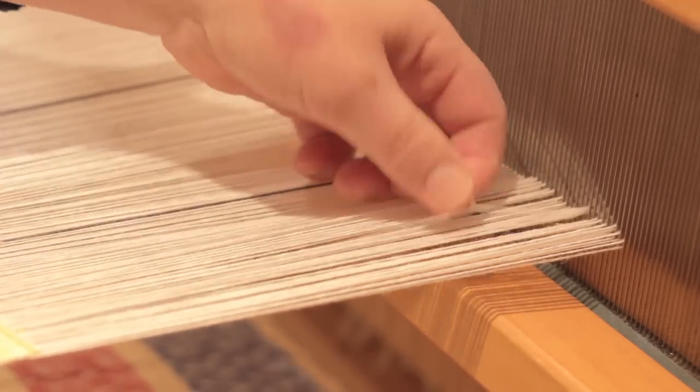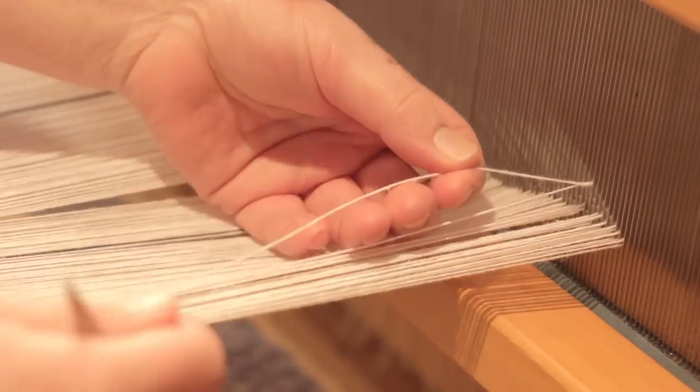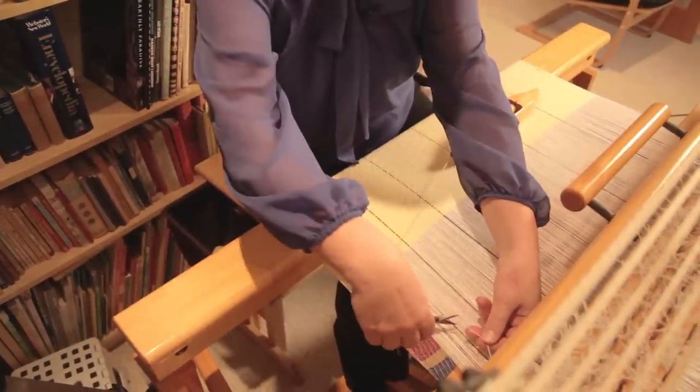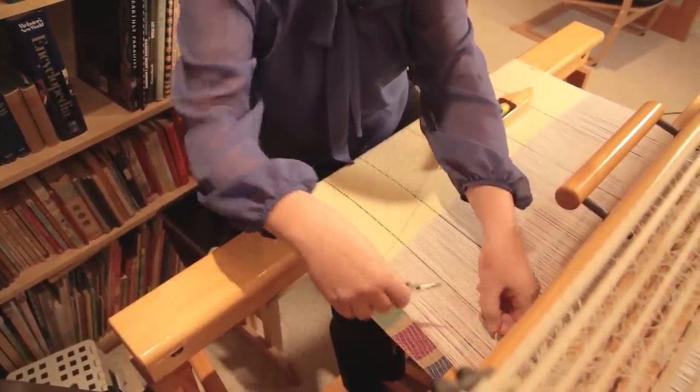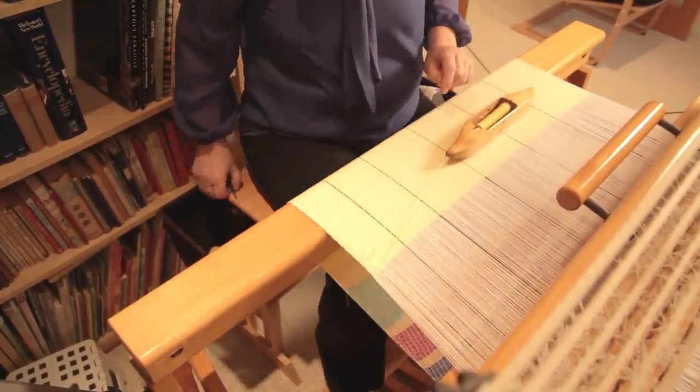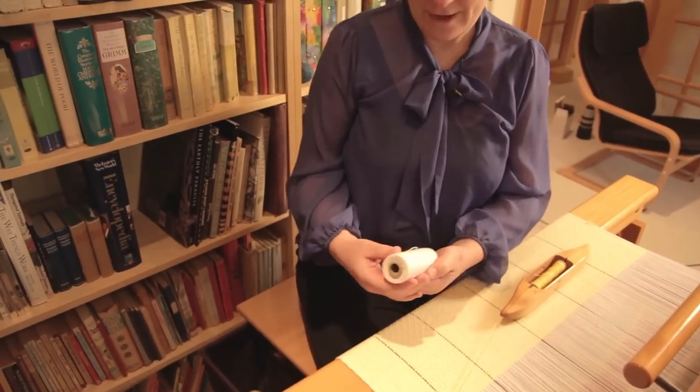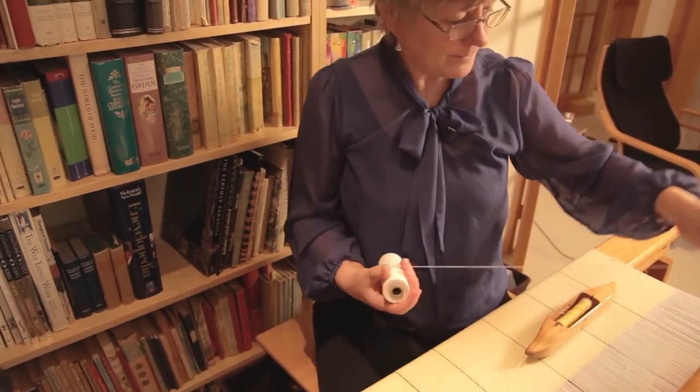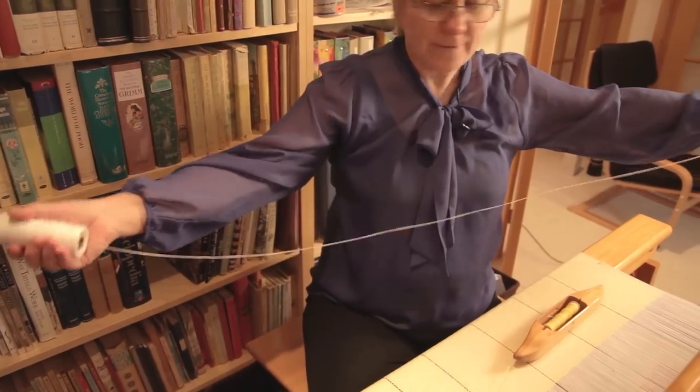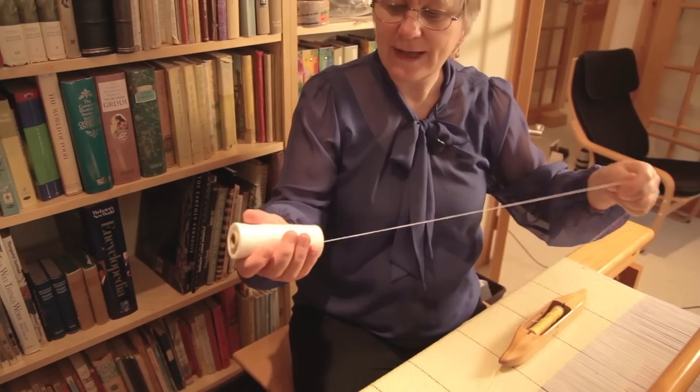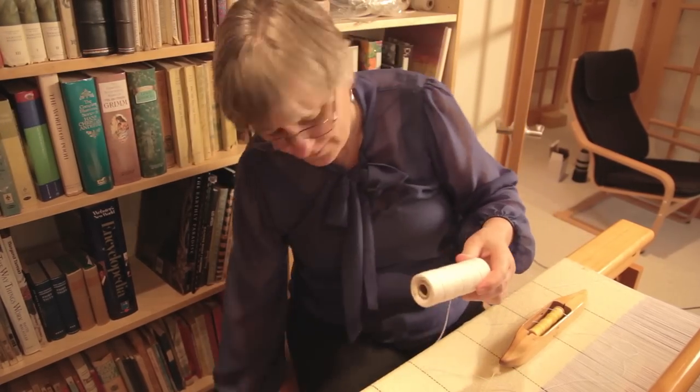This knot is fairly close to the reed here, so I'm going to cut it just a little bit lower, closer to me, and leave that thread there. I'm then going to grab my warp thread and pull out a piece of warp thread which is about equal to the length of the project that I still have to weave.